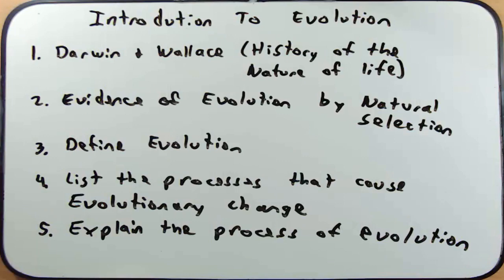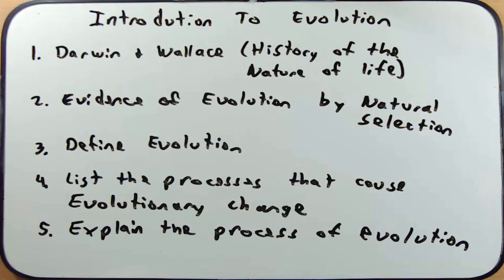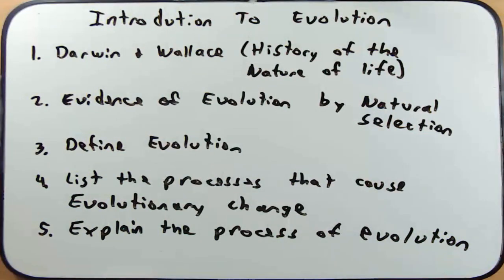We're going to talk about Darwin and Wallace, and we'll also spend some time talking about the history of the nature of life. We'll talk about the evidence of evolution by natural selection, define evolution formally, list the processes that can cause evolutionary change, just introduce these and come back to them later, and then we'll explain the process of evolution.